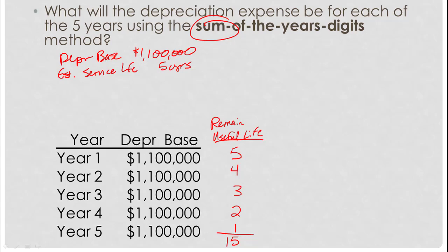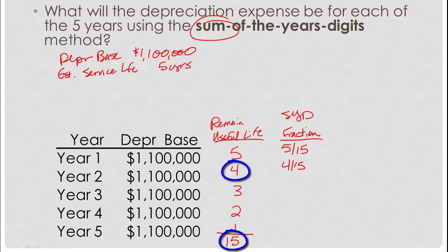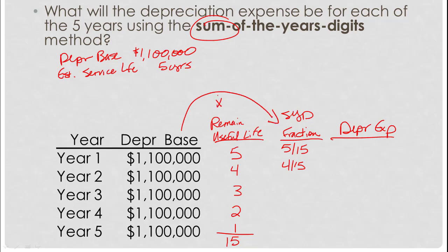Now that we have 15 years as our total, we create a sum of the years digits fraction: remaining useful life divided by the total digits. So year one is 5/15, year two is 4/15, and so on. Finally, depreciation expense equals the depreciation base times the fraction. So $1,100,000 times 5/15 gives us $366,667 in year one. $1,100,000 times 4/15 is $293,333 for year two. Go ahead and take a couple of minutes to finish up the rest of the table.